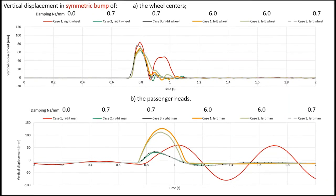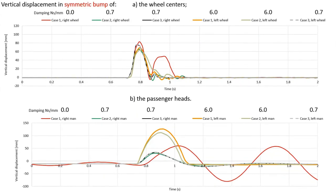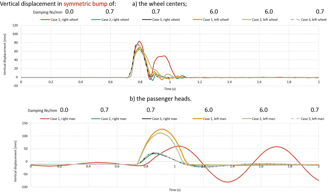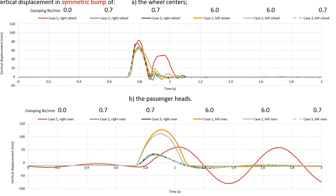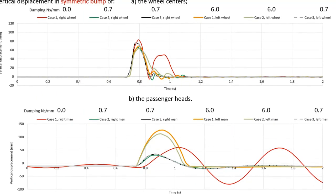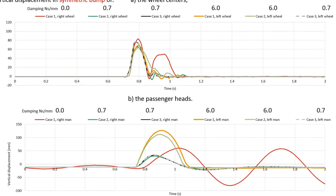In case two, when a moderate damping is added under the right passenger, his oscillations are significantly reduced, but even the height reached by the passenger aside is significantly reduced.